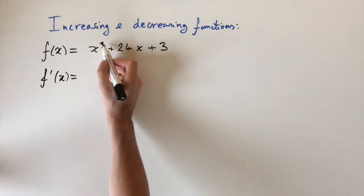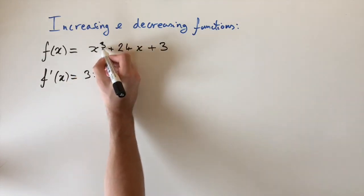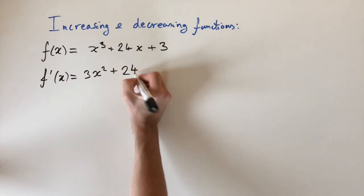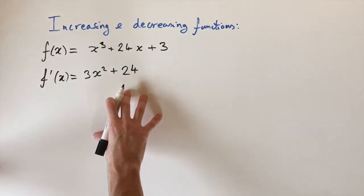And to do that, we just bring down the power, so the 3 comes to the front, and we reduce the power by 1, and then this comes to 2. So that's just the general rule. And then this goes to 24, and the constants vanish. So this is the derivative, and now what do you notice?